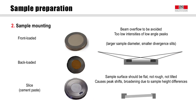Especially for phases that show high peaks in low-angle regions, such as ettringite or AFM phases, this beam overflow problem will lead to an underestimation of their content in quantitative phase analysis. Other requirements are that the mount surface should be flat, without roughness and not tilted, in order to avoid peak displacement or broadening associated with sample height differences or misalignment.